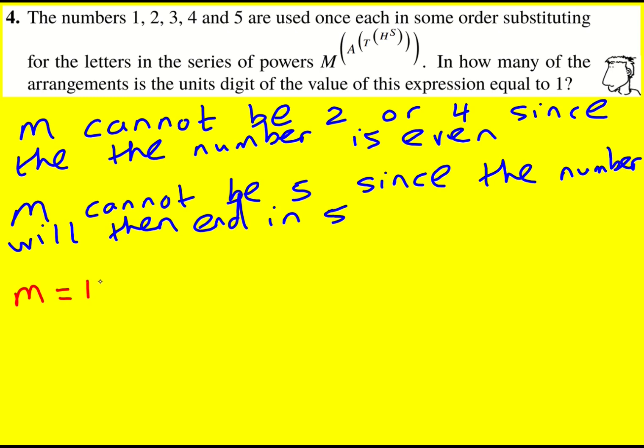So case 1, M equals 1. Now 1 to any power is actually going to be 1. So we can arrange A, T, H, and S however we want. And so then there's going to be 4 ways of choosing A, 3 ways of choosing T, 2 ways of choosing H, and 1 way of choosing S.